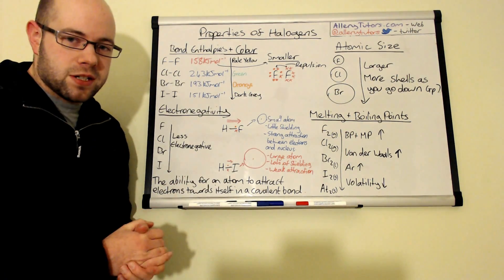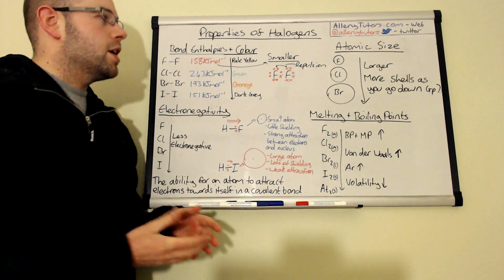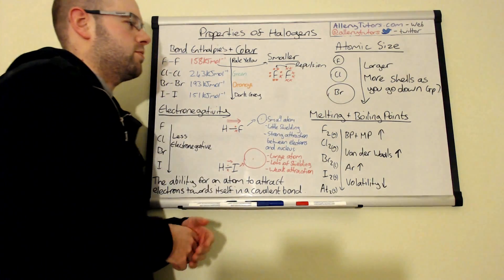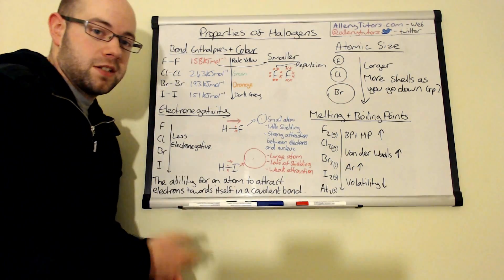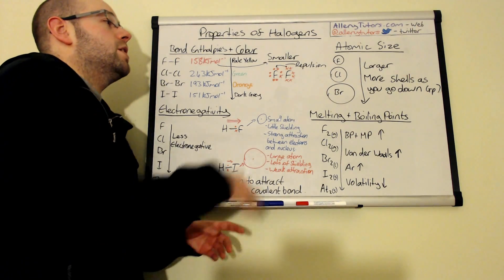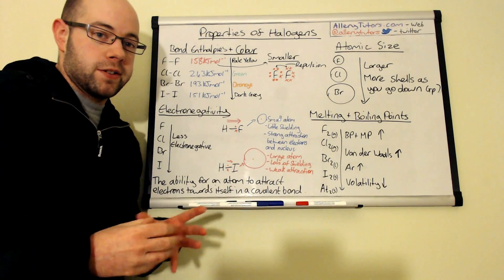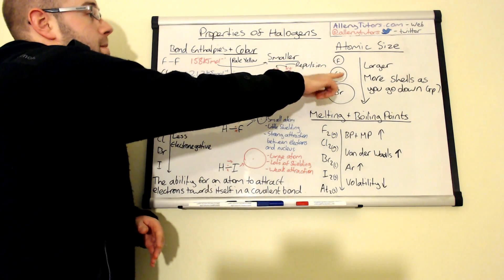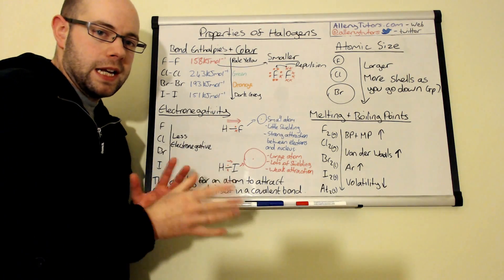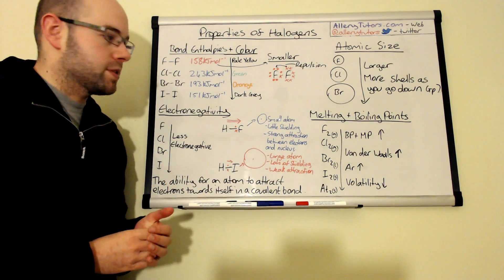Now as I said before the atomic size as we go down the group gets larger and so from fluorine through to bromine iodine and astatine etc these atoms get bigger you've got more shells and that has actually a strong link with bond enthalpy as well. So make sure you can link these two together and you can explain what's happening.